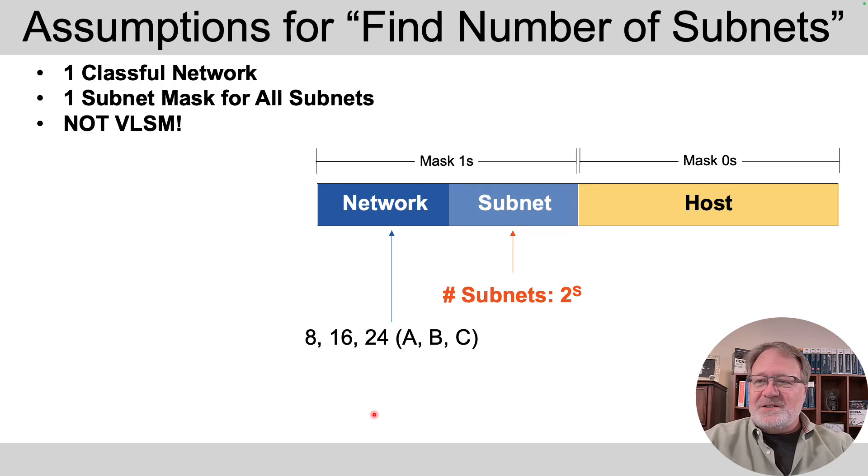So what are those assumptions? It's one classful network, that is one class A, B, or C network that you're subdividing, and you've chosen to use one subnet mask for all subnets and one alone.